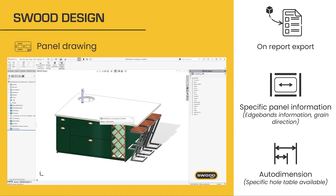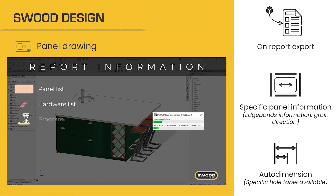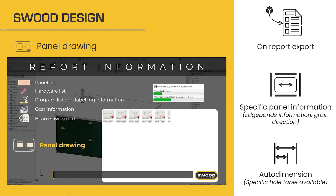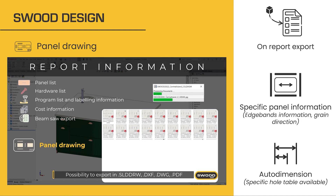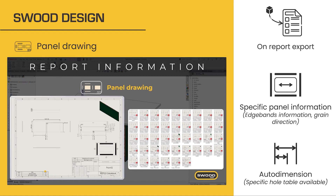This new report document is generated on report creation — we will automatically insert dimension with a whole table and specific panel information, such as edgeband information and grain direction. In addition to the current documents, we now have the panel drawing that automates the SOLIDWORKS drawing generation of all panels in the project, with the information mentioned before.